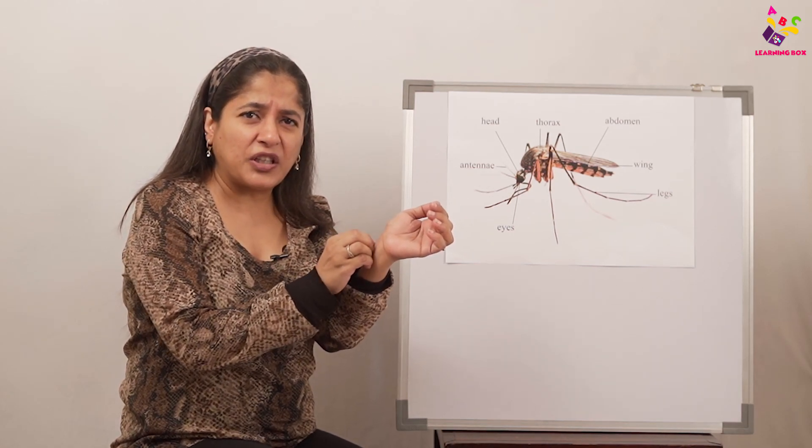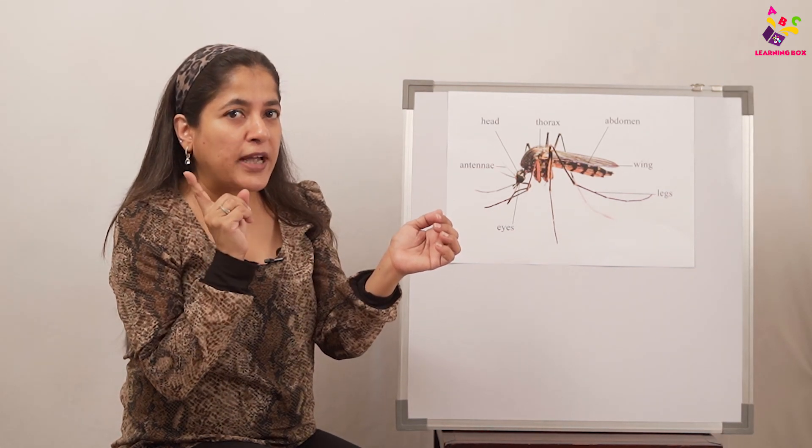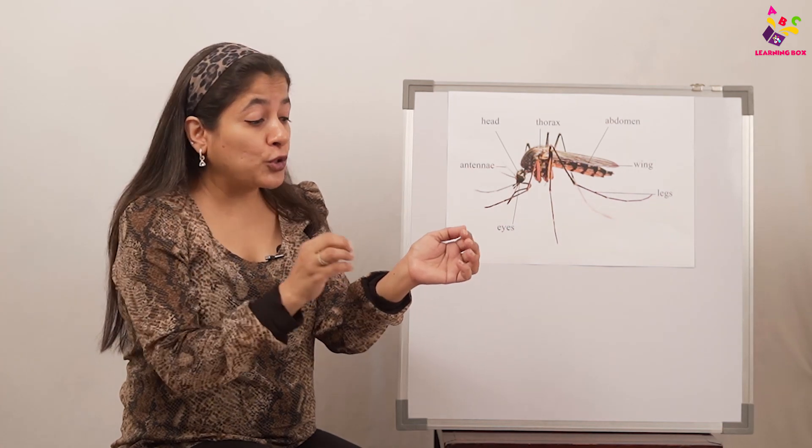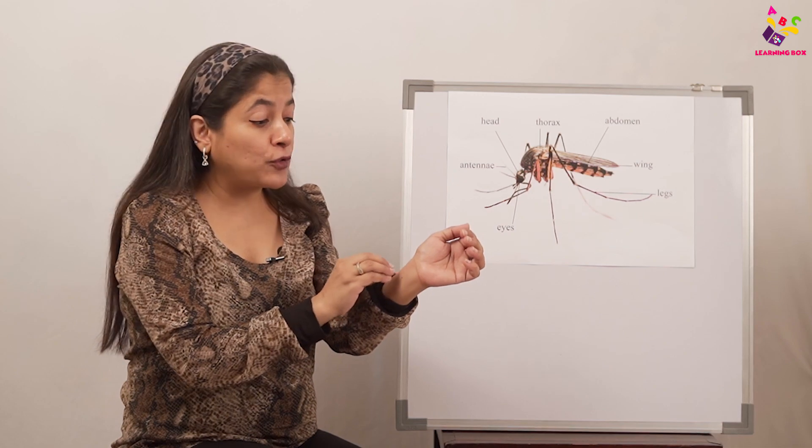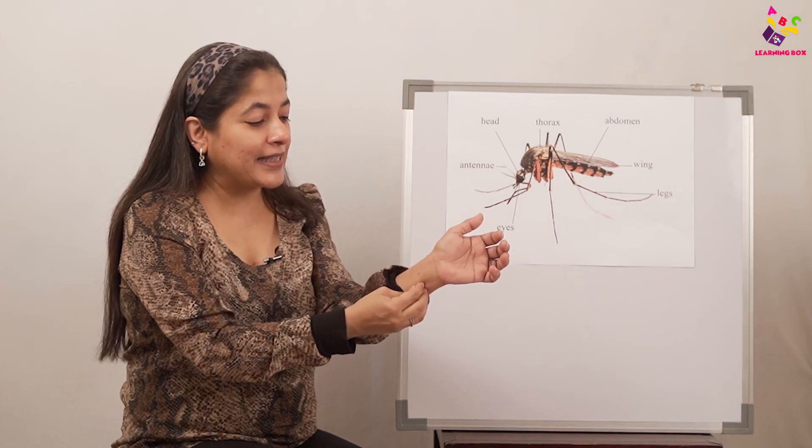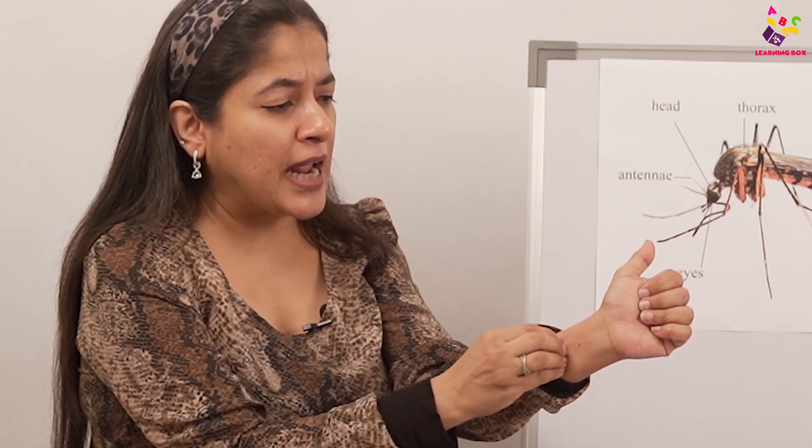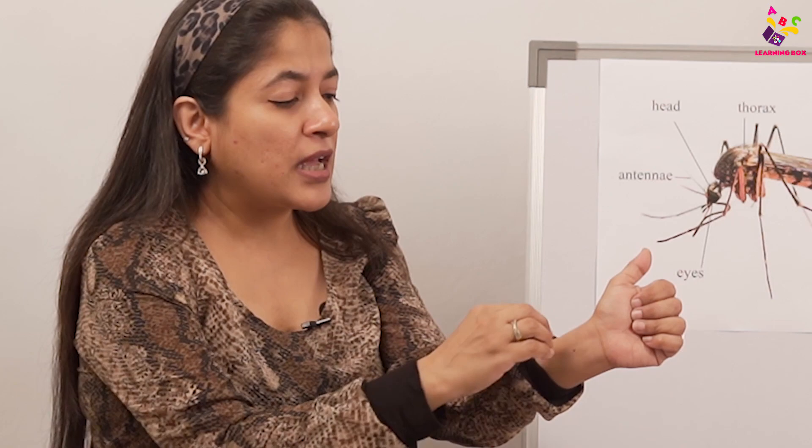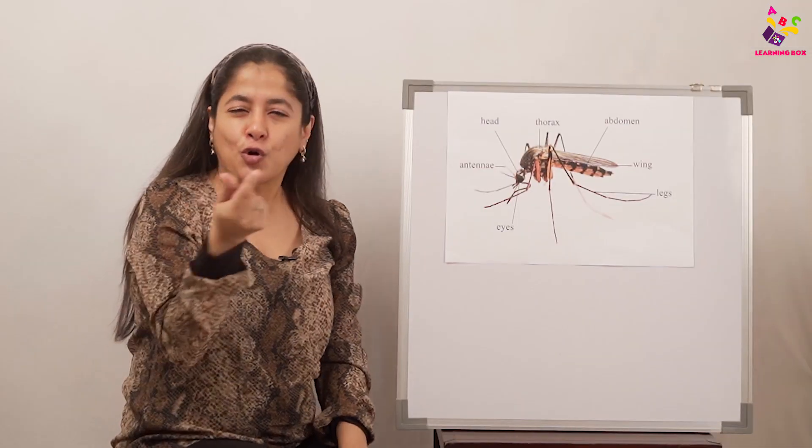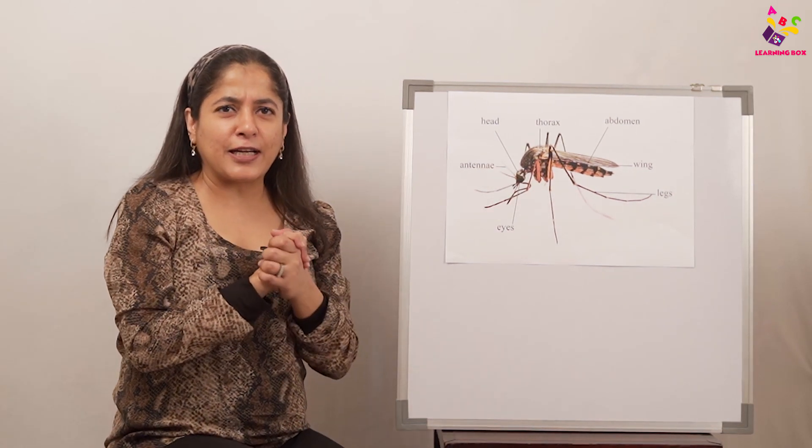When a mosquito bites you, let me tell you a secret. What you have to do is not scratch on the bite—you have to scratch around the bite. See, like this: if I have a mosquito bite here, I should not scratch on it. I should scratch around it, and you will see soon the itching will stop.